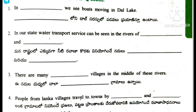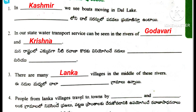4th one: Fill in the blanks. 1st one: In dash we see boats moving — Answer: Kashmir — Dal Lake. 2nd one: In our state, water transport service can be seen in the rivers of dash and dash — Answer: Godavari and Krishna. 3rd one: There are many dash villages in the middle of these rivers — Answer: Lanka. 4th one: People from Lanka villages travel to towns by dash and dash — Answer: Putti and Boats.